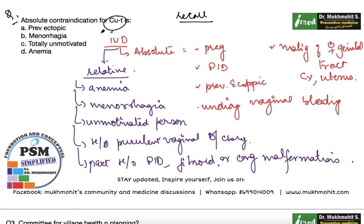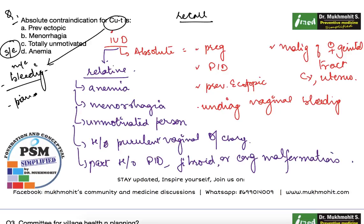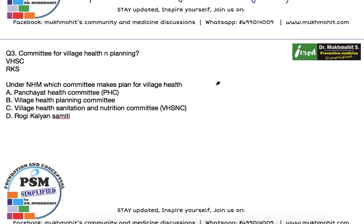Apart from that, a quick recall: the most common side effect or complication of Copper T is bleeding. Other side effects include pain, pelvic inflammatory disease, ectopic pregnancy, and expulsion. So these are your key points on Copper T.